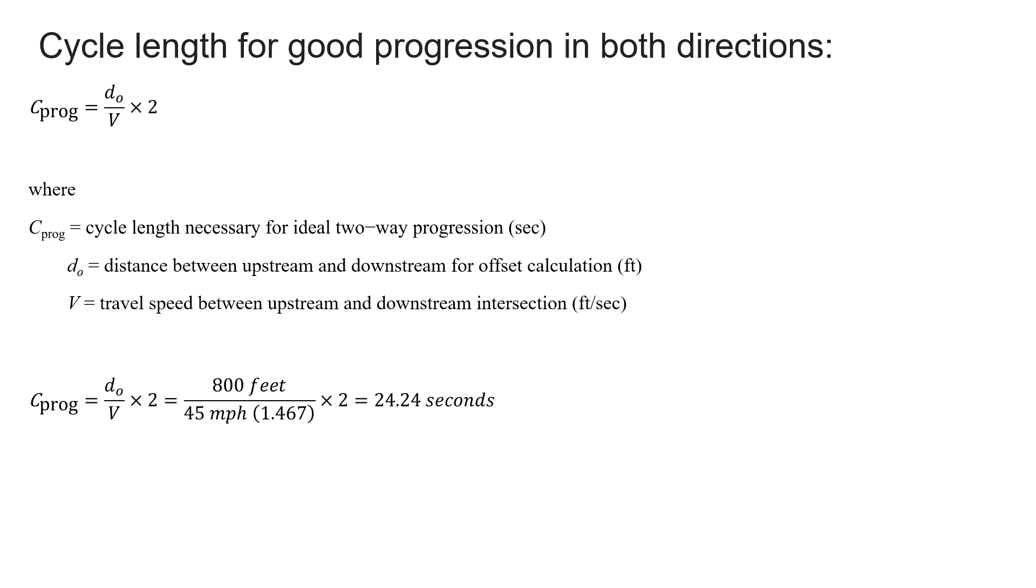So this would be really a theoretical value because this cycle length would be too short in all practical terms because of your lost time and just to process the vehicle. So what this tells us is that we're not going to have ideal two-way progression because we're not going to have a cycle length that's as short as 24 seconds likely in any scenario. So this is a calculation we can do, but likely it's not going to function well at this intersection.